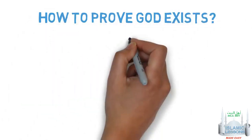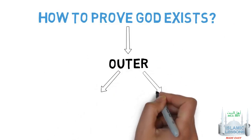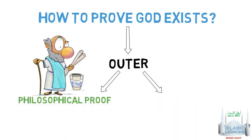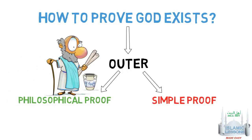How to prove the existence of God. The outer way is divided into two types. The first type is the philosophical proof. The second type is the simple proof.